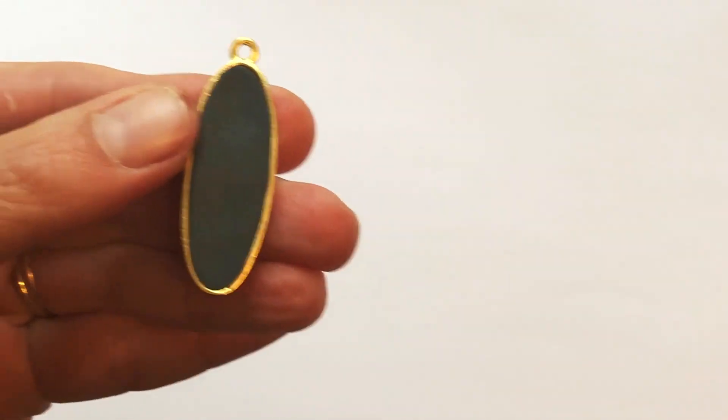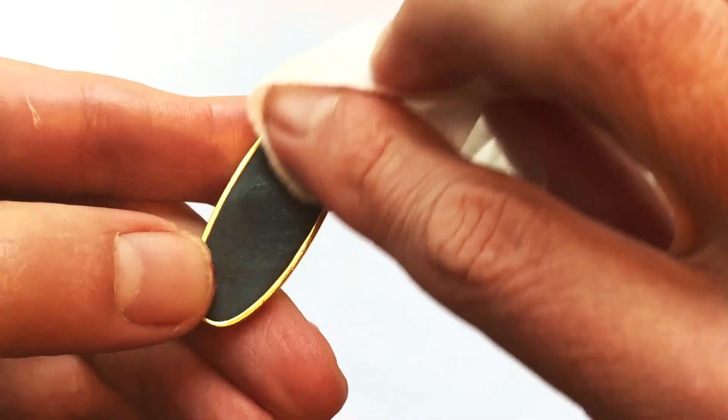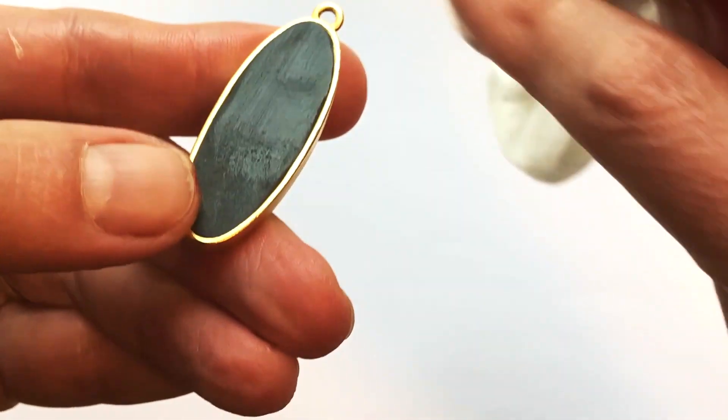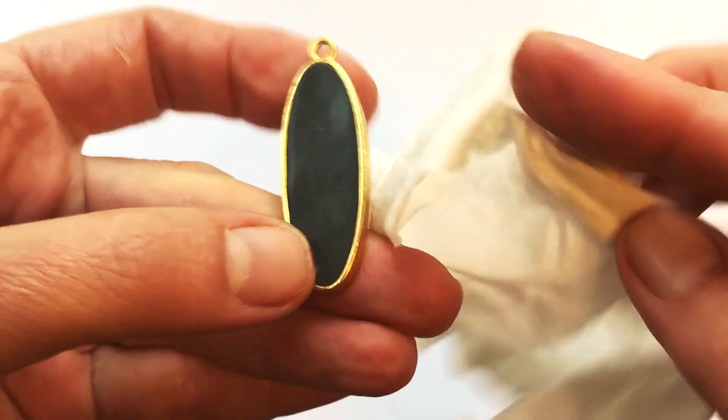But if you do have a lot of fingerprints on there or if it's not nice and smooth, you can take a wet wipe and just smooth the clay. See how that white moisture is just making that nice smooth surface.